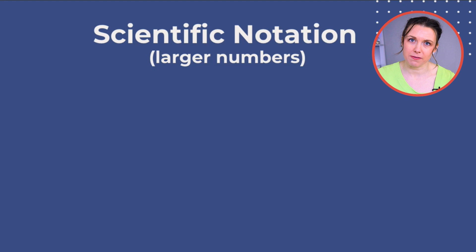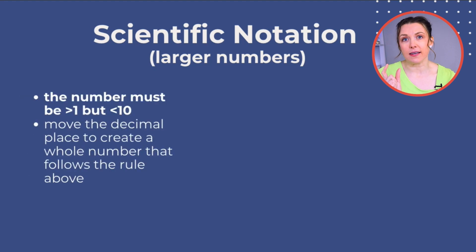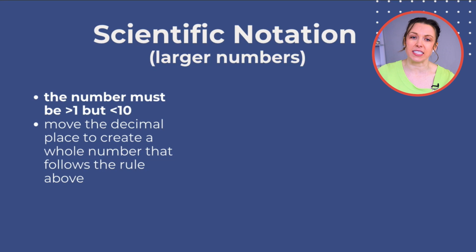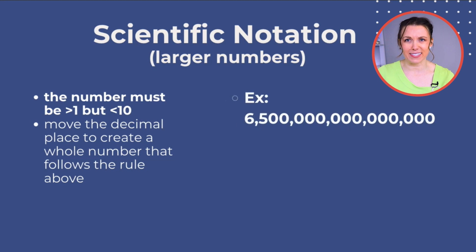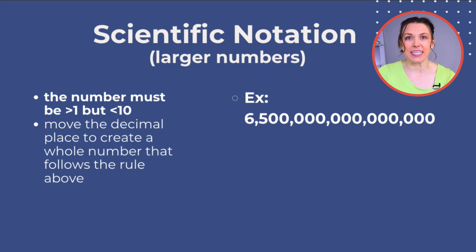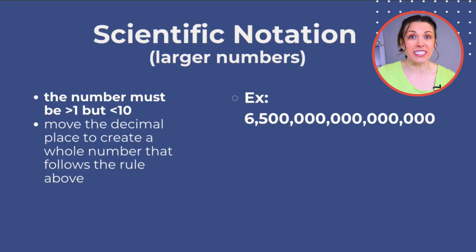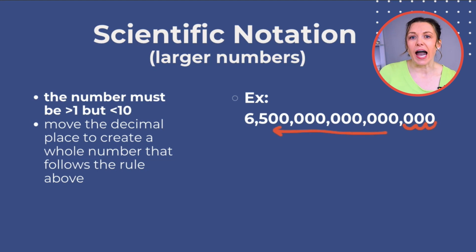Beginning with the larger numbers. When we create this, the base number needs to be between 1 and 10. What we're going to do is really just move the decimal point to create a number that follows this rule. Let's take a look at this number — count up those zeros and see if you can figure it out. It is six zillion five hundred trillion. That is a huge number that is actually kind of hard to figure out because we really have to count all of those zeros. That is why we use scientific notation. I'm going to count the number of zeros and go all the way across until I put my decimal point between the six and the five.